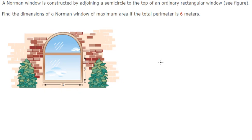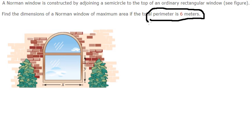Hello everybody, today I want to talk about calculus. The topic is about applications of the derivative. I want to show you how to answer: we know that the perimeter of the window is about six meters, so the perimeter of this one should be from this one in here.